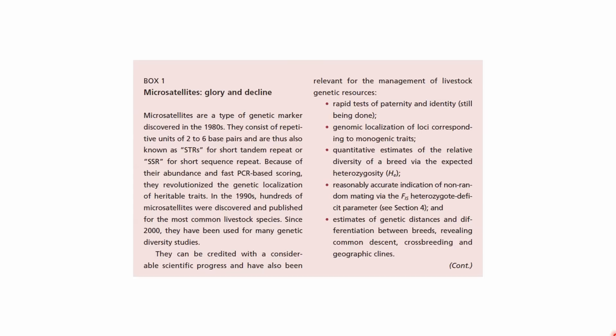The text states: microsatellites are a type of genetic marker discovered in the 1980s. They consist of repetitive units of two to six base pairs and are thus also known as STRs — short tandem repeats — or SSRs — short sequence repeats. Because of their abundance and fast PCR-based scoring, they revolutionized the genetic localization of heritable traits. In the 1990s, hundreds of microsatellites were discovered and published for the most common livestock species, and since 2000 they have been used for many genetic diversity studies. I'd like to stop here.